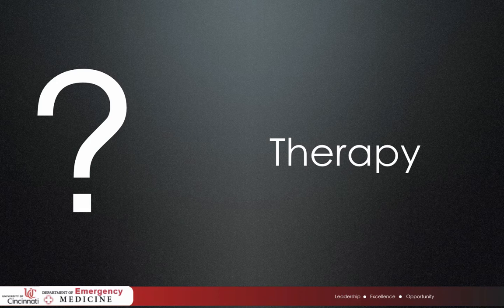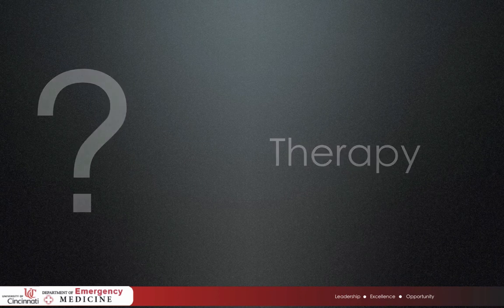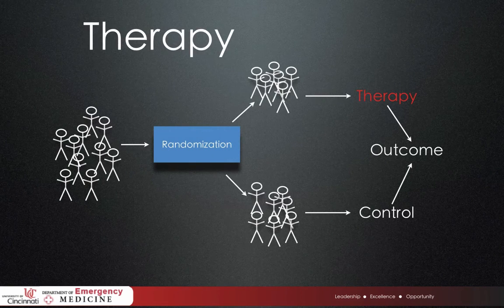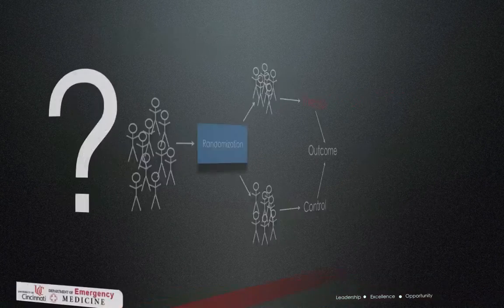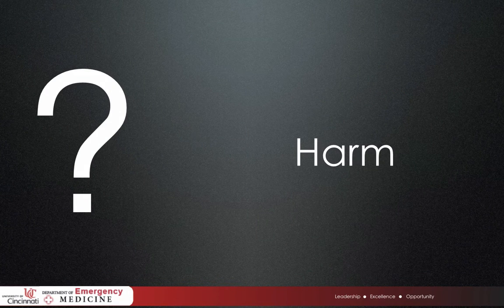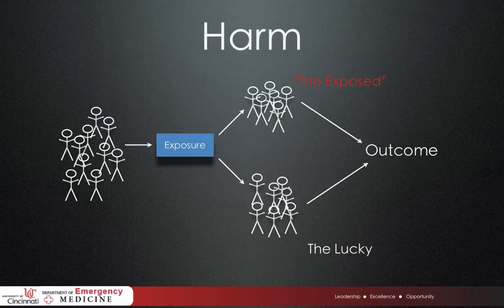What we asked with our catheter-directed TPA question is a therapy question, and these questions are generally best answered by randomized controlled trials or meta-analyses of randomized controlled trials. We could have looked at harm by asking: in patients with DVT, what's the rate of significant bleeding with low molecular weight heparin? This type of question is usually answered by a cohort study or a case-controlled series.